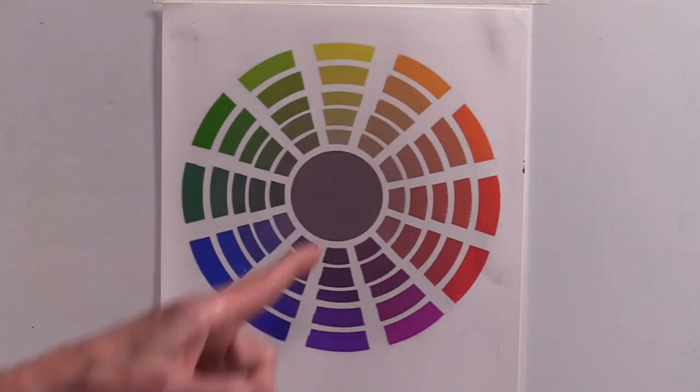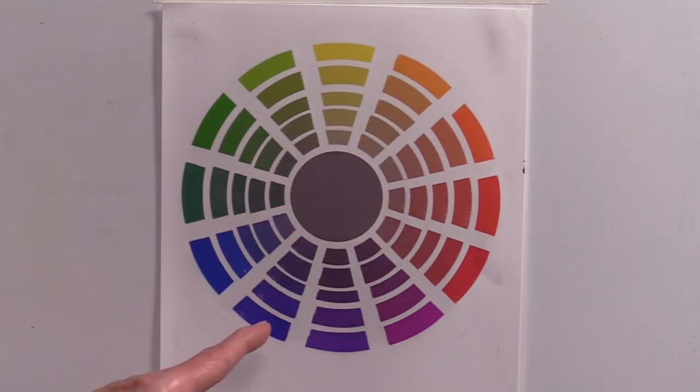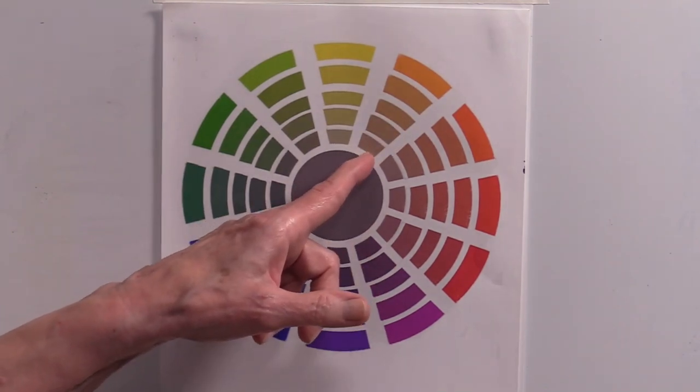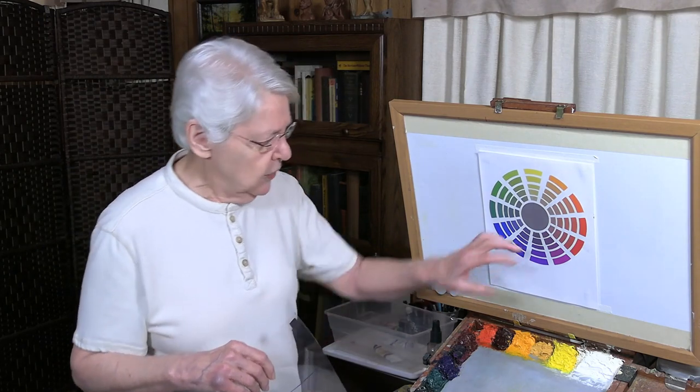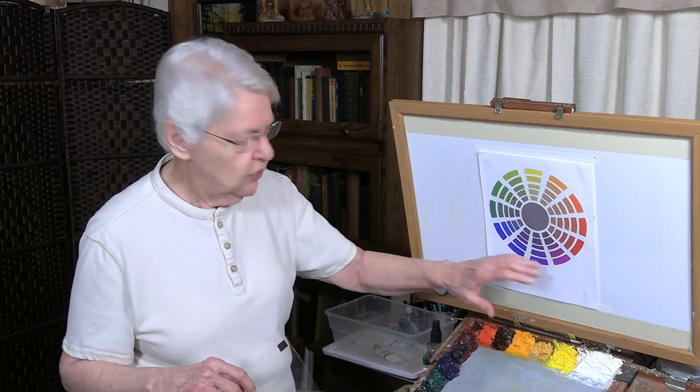And what that means is on the opposite side, a complement is being added in causing it to be more neutral. Now why that is important is that when you're doing gamut mapping, you're including all of these as well as whatever colors you choose for your scheme.